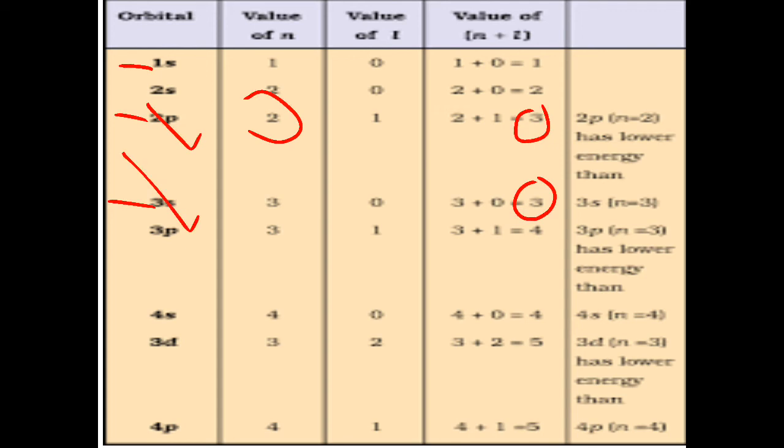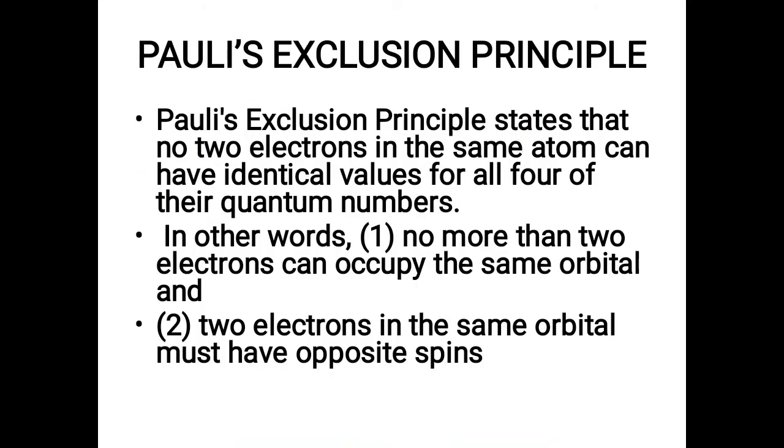The next is Pauli's Exclusion Principle. It is again very interesting thing to know about the electron's position. When I see this rule it states that no two electrons in the same atom can have identical values for all four of their quantum numbers.